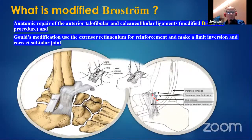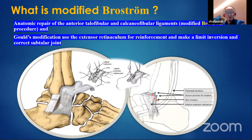What is the modified Brostrom? It has two components: anatomic repair of the anterior talofibular and calcaneofibular ligament, and use of the Gould modification of the extensor retinaculum to reinforce and limit inversion of the subtalar joint.